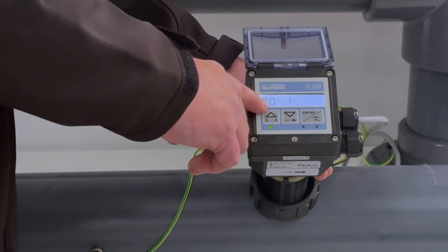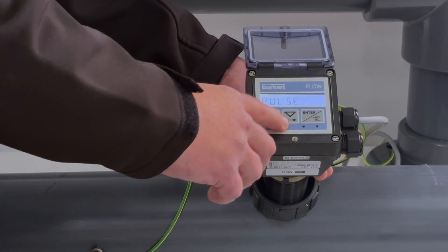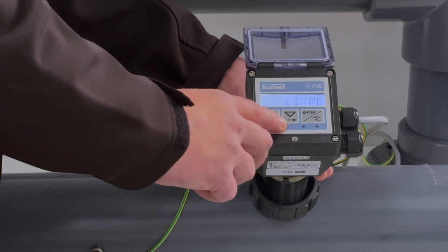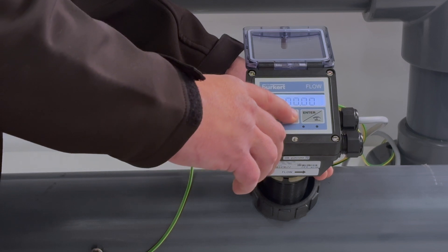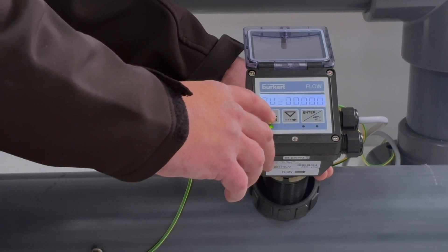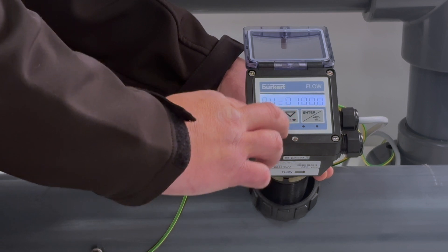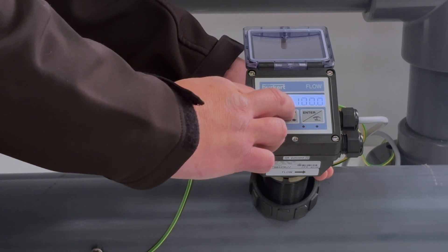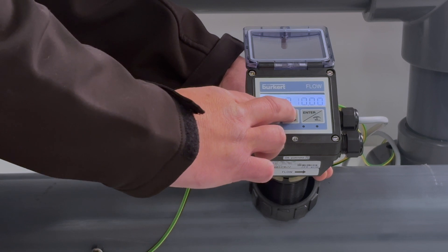I'm then going to set my digital output 1 which is going to be my pulse output. I'll set this for one pulse per liter. Again, I can change the decimal places by pressing momentarily the up and down buttons to what value I'd like to set it at.